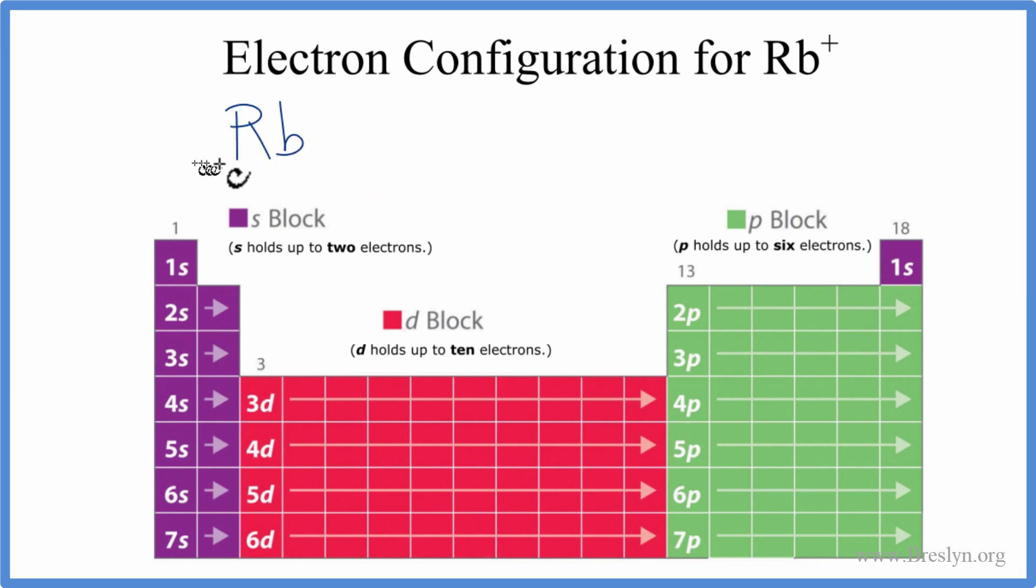So this is Rb as it's found on the periodic table. It's neutral. It doesn't have a plus or a minus on it. So if you look at the periodic table, Rb looks like this. This 37, that's the atomic number, and that tells us the number of protons. Because this is neutral, Rb itself is neutral, it doesn't have that plus or minus. This 37 protons equals the number of electrons. So we're going to distribute those 37 electrons around the nucleus of the rubidium atom.